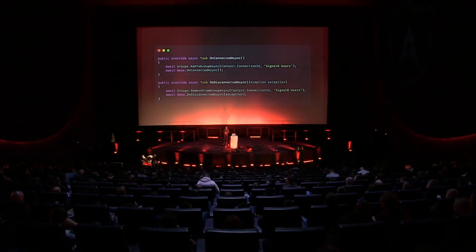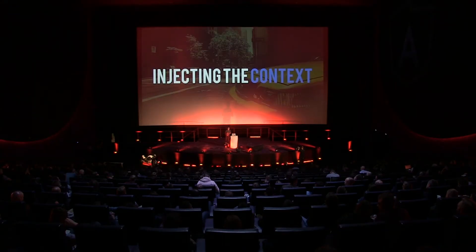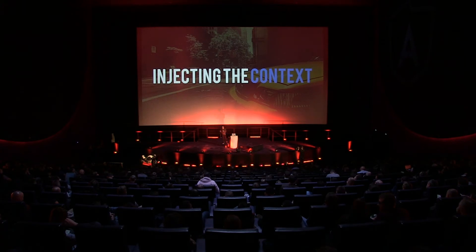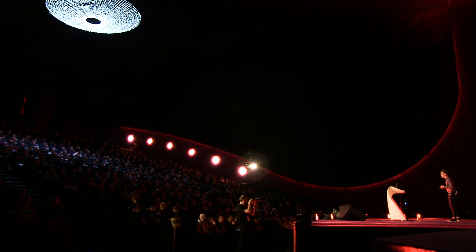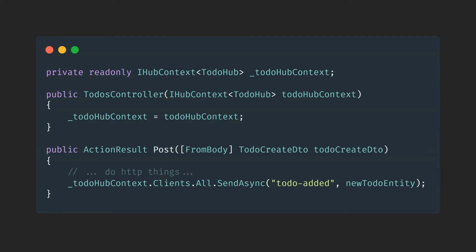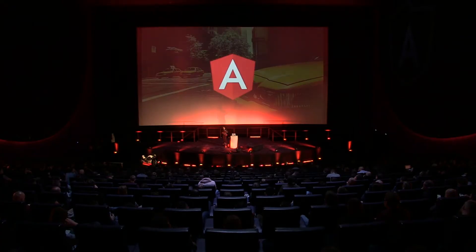Hey, I deleted something. Or your colleague deleted something. Or somebody is updating a document you're working on right now. So what you can also do is inject the complete hub context into your controller and throw events when you're doing a GET, POST, PUT, DELETE, or whatever in your Web API. You can inject it via dependency injection in ASP.NET Core, and then when a POST request comes in, you just say Clients.All.SendAsync — maybe 'todo-added' — and pass the new to-do entity down to your clients.